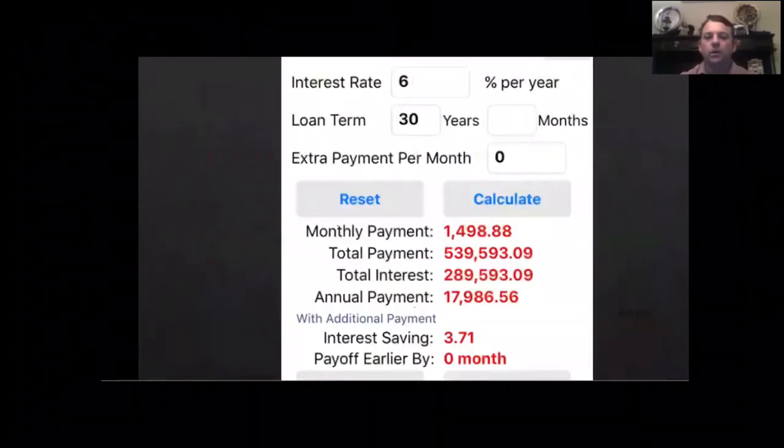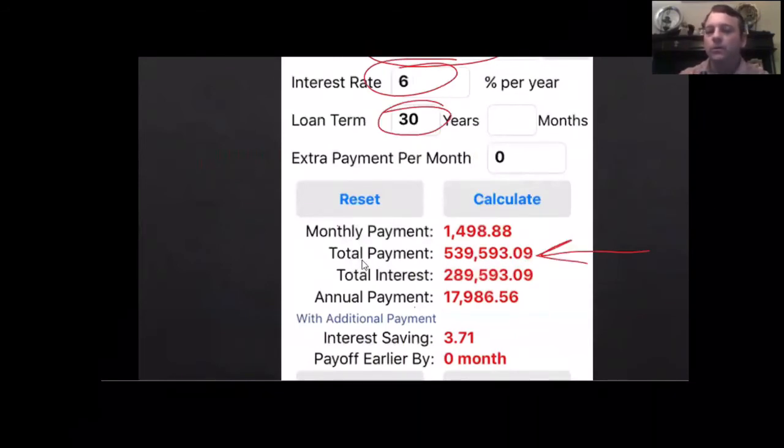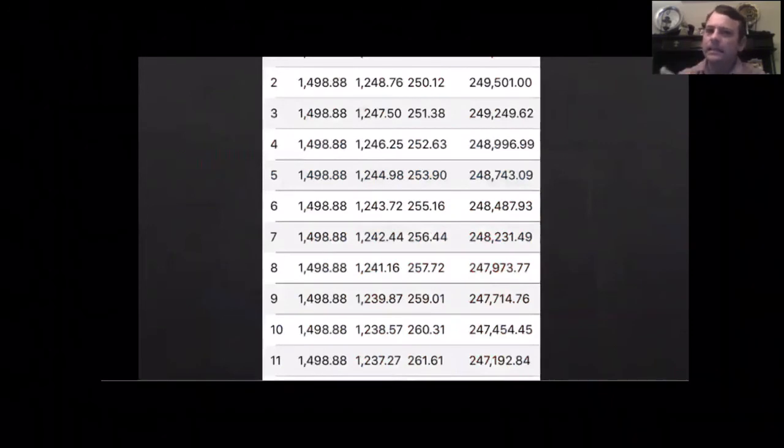Let me show you an actual screenshot of a loan calculator so you can see this is real information. If we take that $250,000 loan at 6% interest over 30 years and don't throw any extra payments on it, look at our total payment: we're going to spend $539,593.09 on a $250,000 house. Does that look like 6% interest to you? It doesn't, and yet it is.